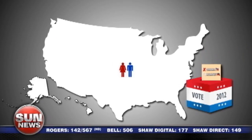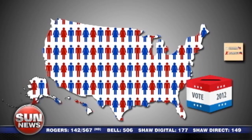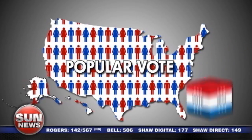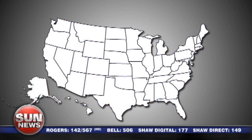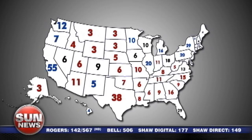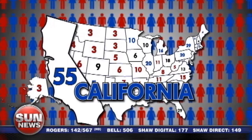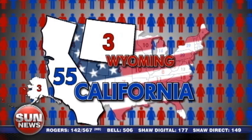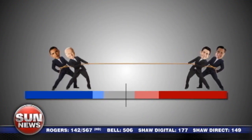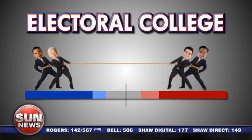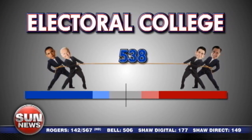U.S. elections are not decided by total votes — that's the popular vote. Presidents are actually elected by individual states. Each state is allotted a number of electors, based mostly on population. California has more than 50, Wyoming just three. All of those electors are collectively known as the Electoral College.